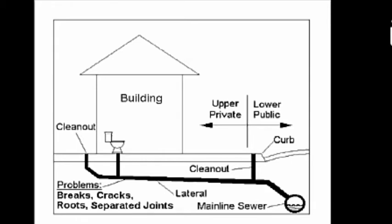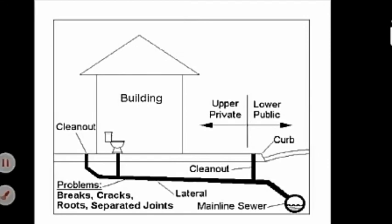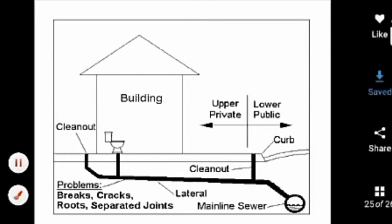There is another layout for sewage lines for an individual house. The building has a clean-out pipe that connects to the main sewer. There is an inlet from the water closet and an inlet from the washroom, all connecting into the main sewage line.